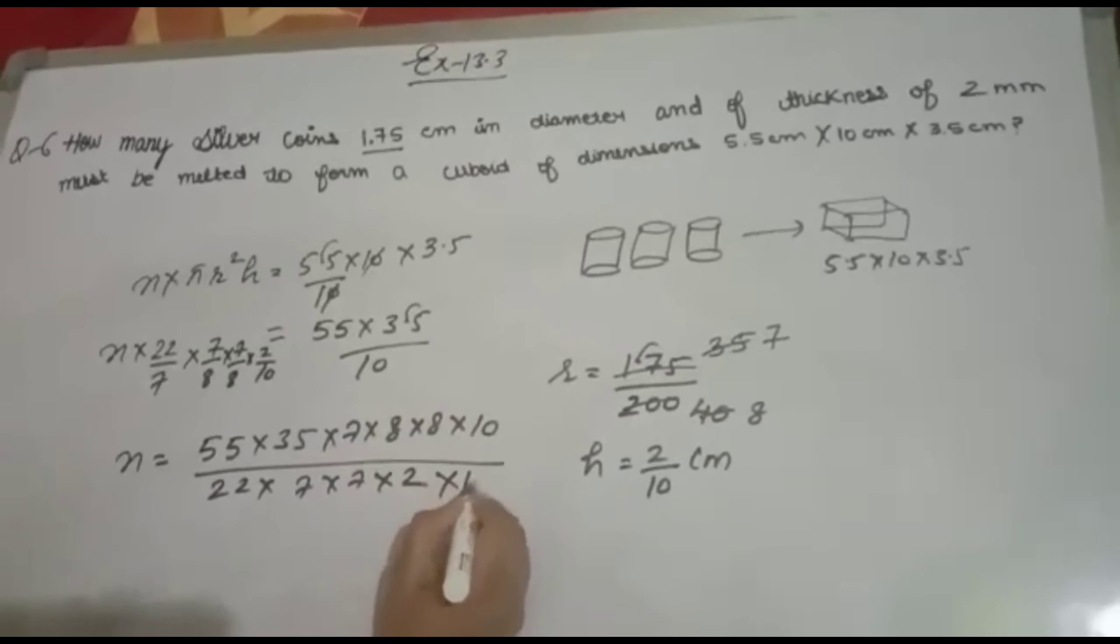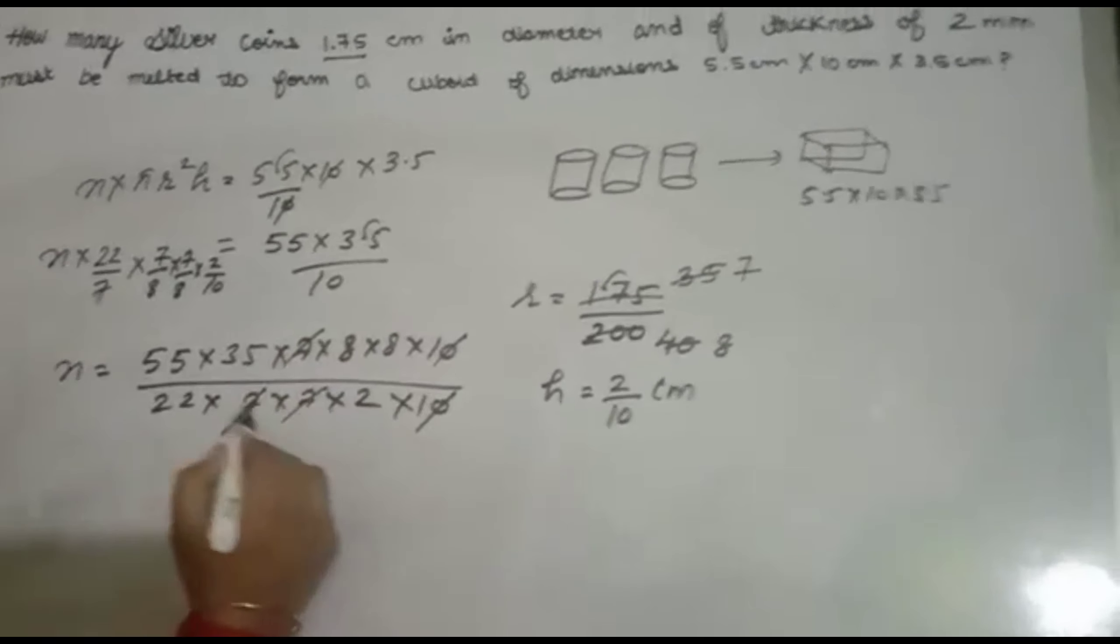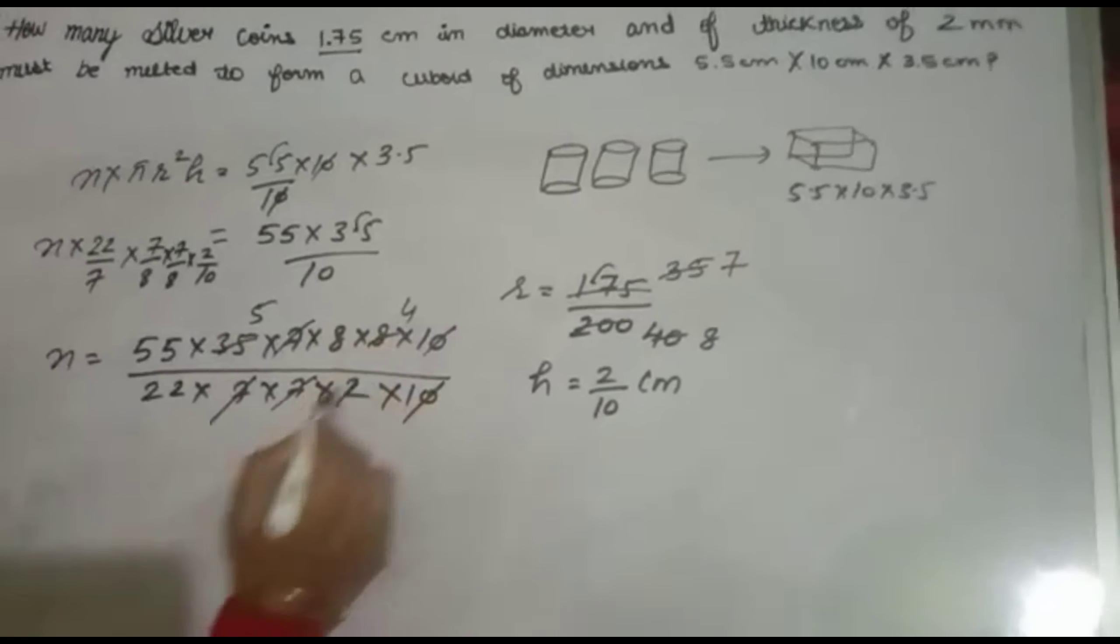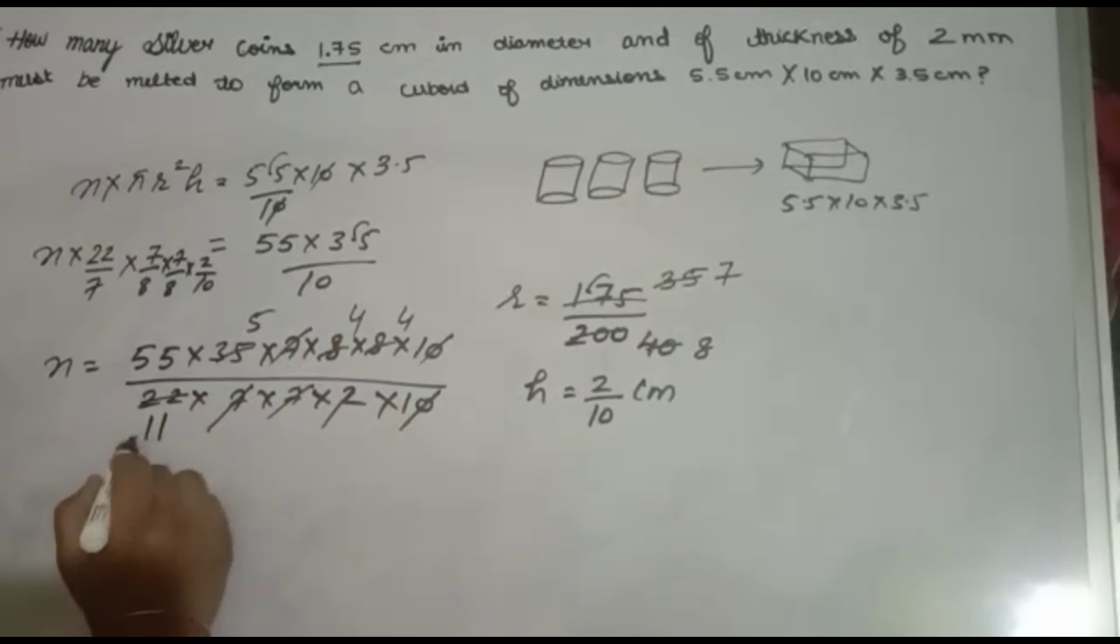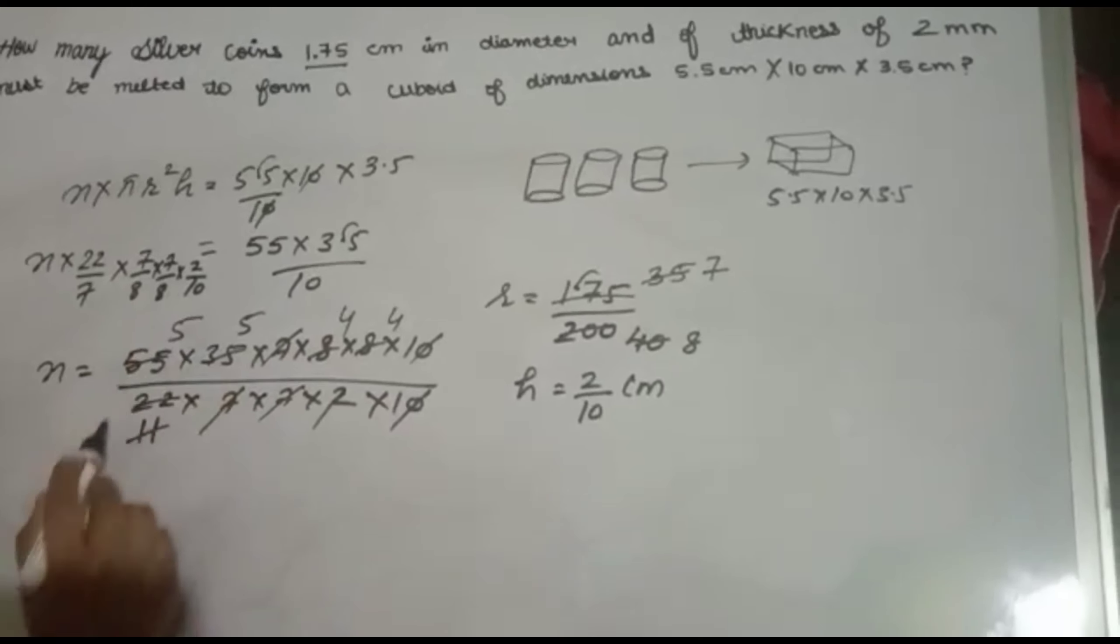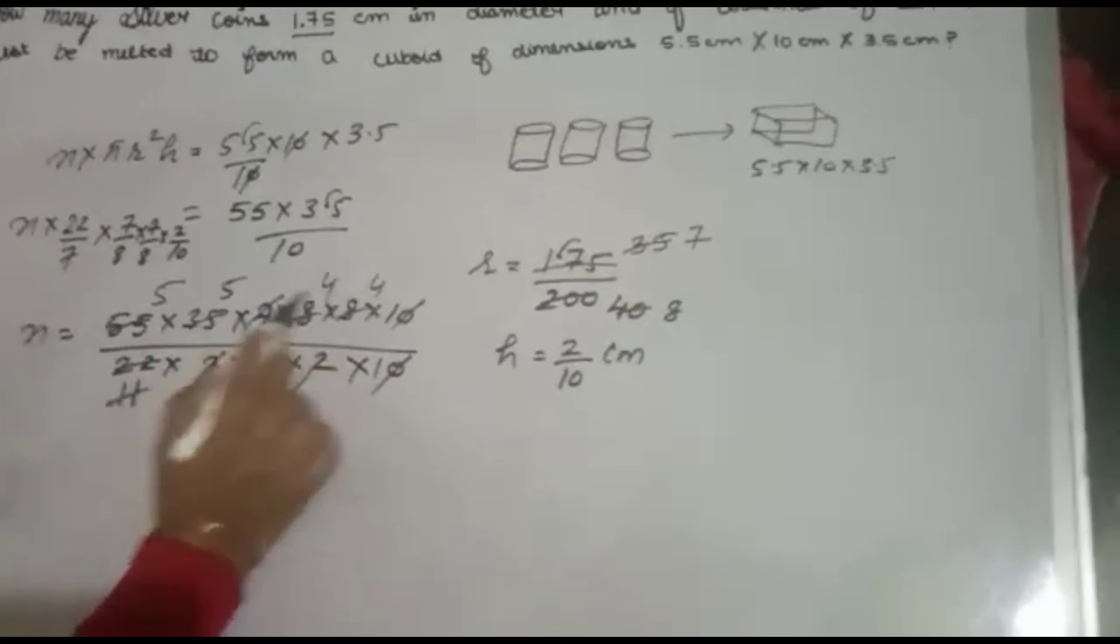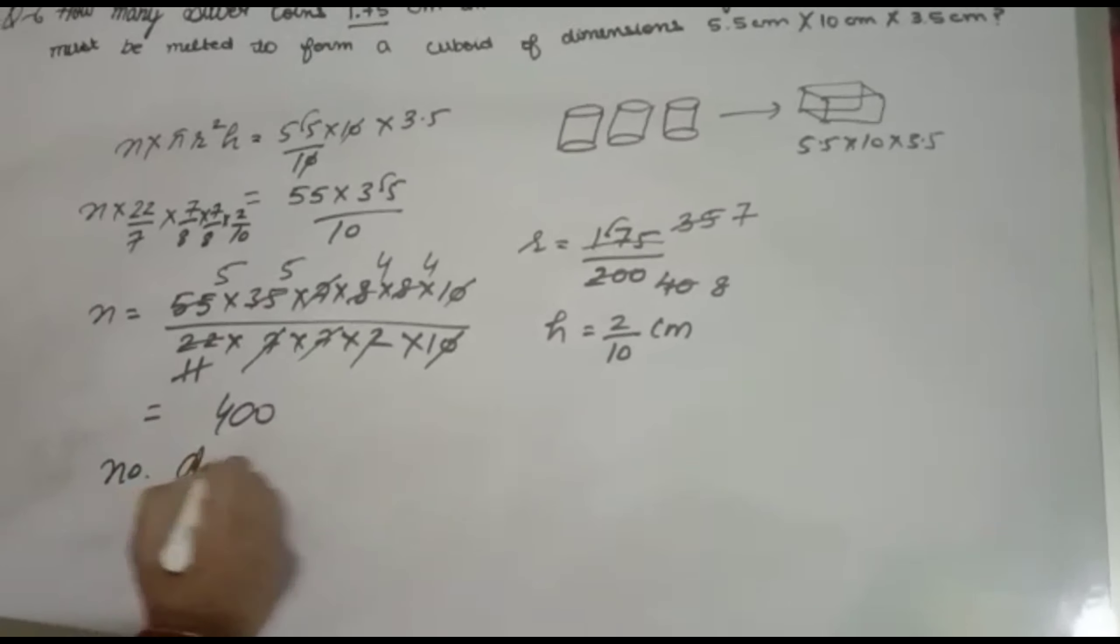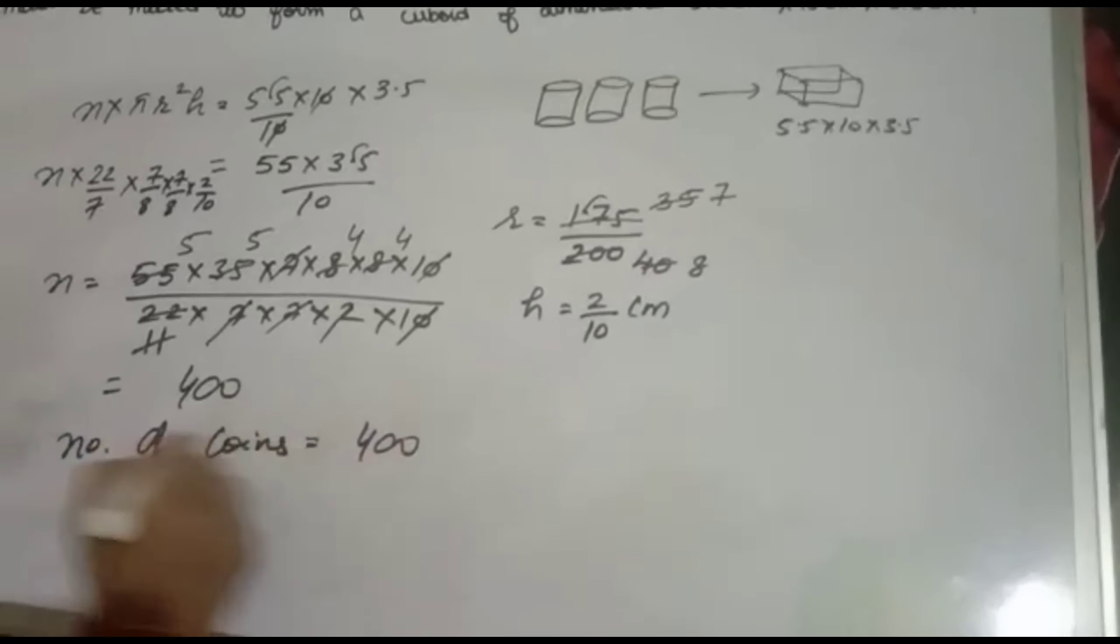After cancellations (10s cancel, 7s cancel): 2×11=22, 2×4=8, 11×5=55, 5×5=25. Computing: 25×4=100, 100×4=400. Therefore, the number of coins is 400.